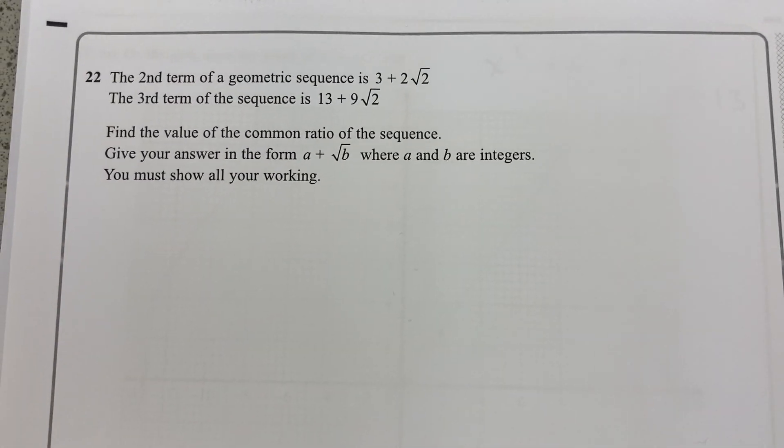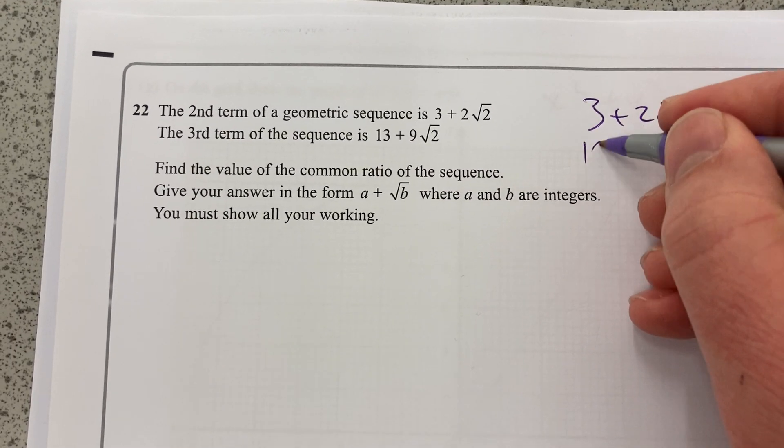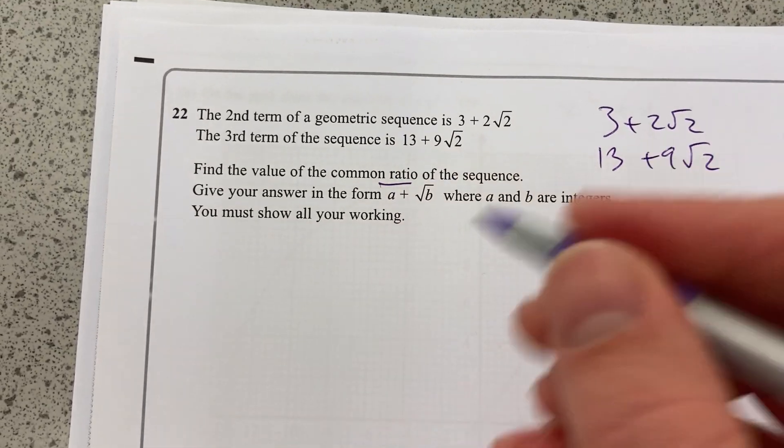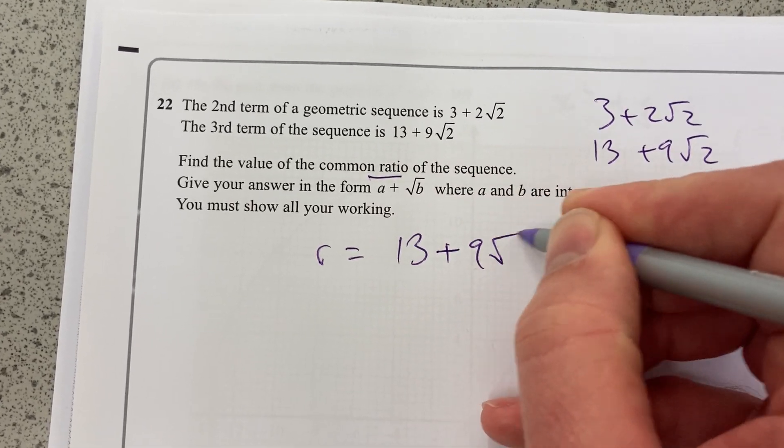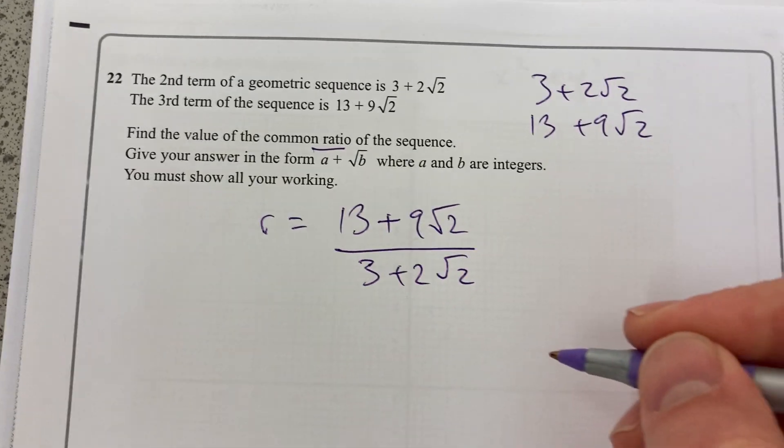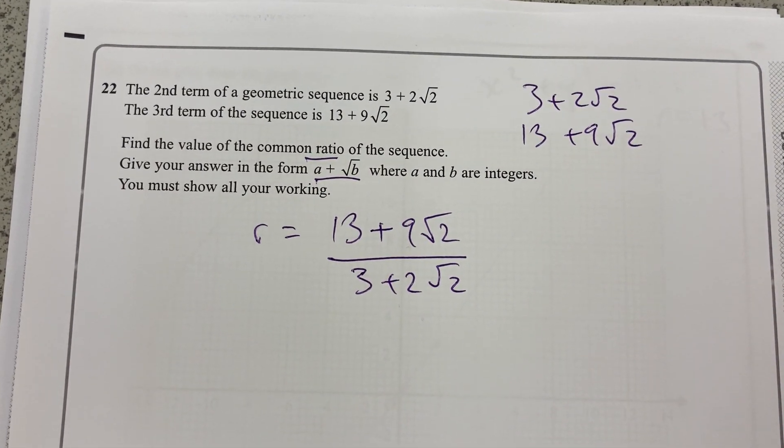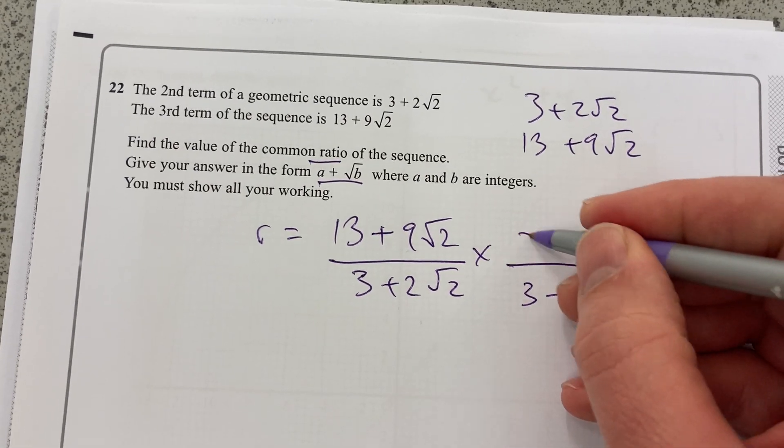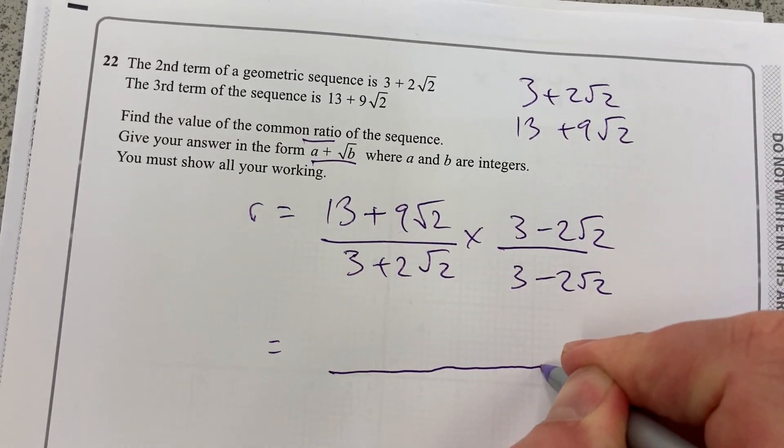It's on surds. Second term of a geometric sequence is 3 plus 2 root 2. Third term is 13 plus 9 root 2. We're going to work out the common ratio. Now, remember, the common ratio is one term divided by the other. So, 13 plus 9 root 2 over 3 plus 2 root 2. We've got to rationalize that to get into form A plus root B. I'm going to multiply by the conjugate. 3 minus 2 root 2. 3 minus 2 root 2. So, it's the same term there, but I've swapped the signs.